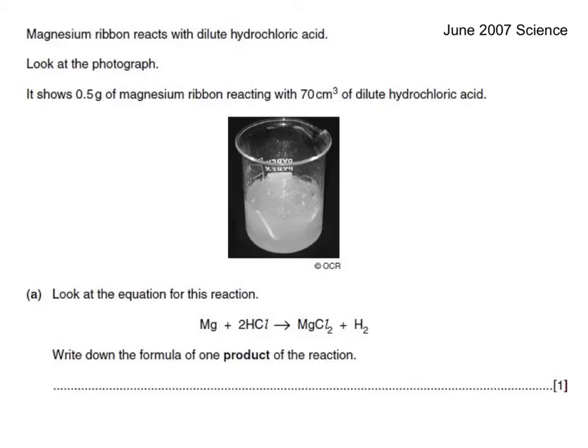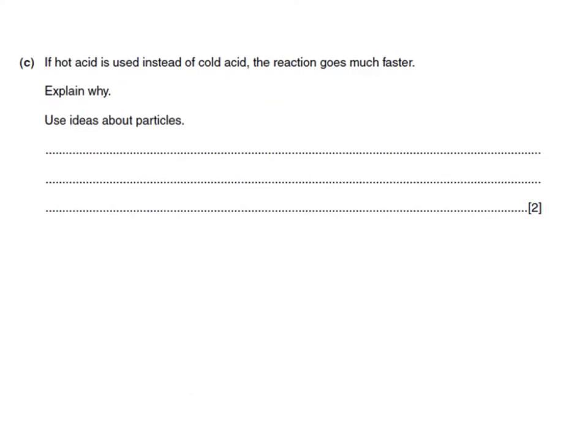Here's another exam question. Magnesium ribbon reacts with dilute hydrochloric acid. Look at the photograph. It shows 0.5 grams of magnesium ribbon reacting with 70 cubic centimeters of dilute hydrochloric acid. Look at the equation for this reaction. Write down the formula of one product of the reaction. This is quite straightforward. On the left-hand side of any chemical equation will be the reactants. The products are written on the right-hand side. They're only asking for the formula, not the name of a product. So we would write MgCl2, or we might write H2. Either of those would be accepted.